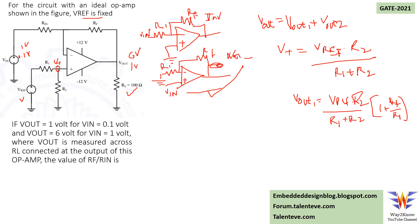For the inverting configuration, the non-inverting terminal is treated as grounded and Vin is applied at the inverting input. The gain for this configuration is −RF/R1, so Vout2 = −(RF/R1) · Vin. This gives us the output for the inverting configuration.